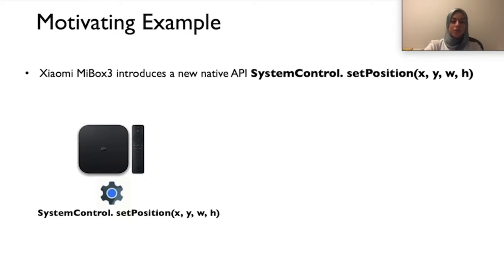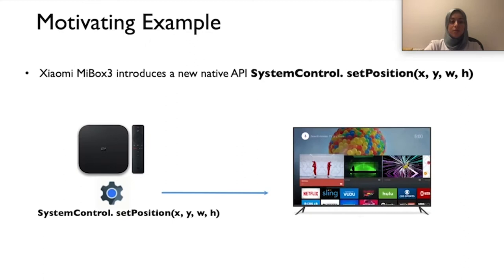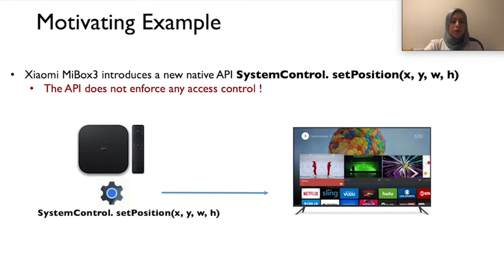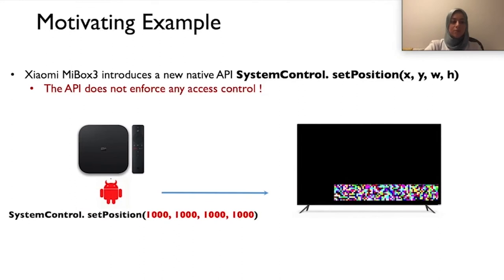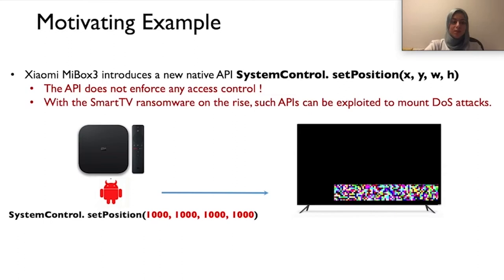Consider the following example. Xiaomi Mi Box introduces a new native API called the System Control Set Position. It allows setting the display at position XY with size WH. We found that the API does not enforce any access control, implying that any app can mess up the display under specific parameters. The figure on the right shows how the display is corrupted after invoking the API with the highlighted parameters. Users would resort to rebooting the device to fix the problem, but it turns out these parameters are persistent across reboots, making it impossible to fix without a hard reset.